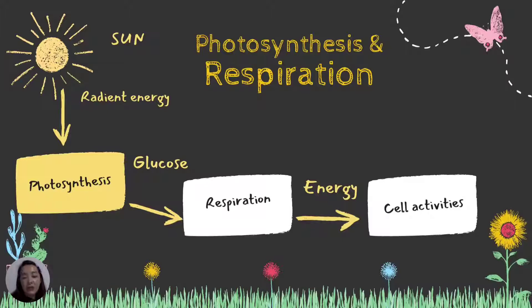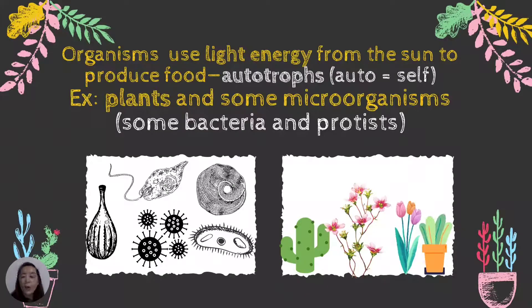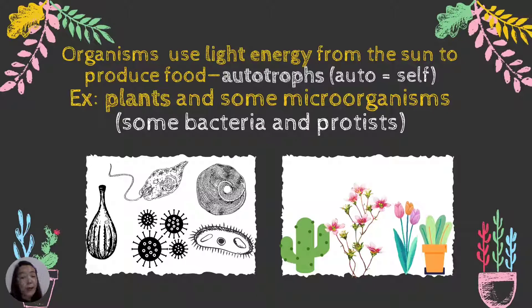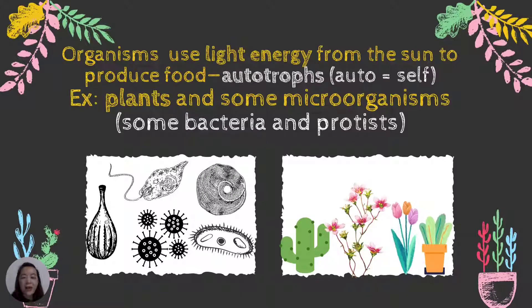Respiration breaks down the energy from glucose to be used by the cell for the cell to survive. Organisms that use light energy from the sun to produce food are called autotrophs.